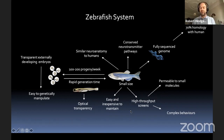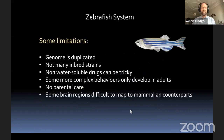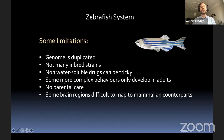There are some limitations. The genome is duplicated, so you have to knock out two copies if you want to do a knockout. There are not many inbred strains. Non-water-soluble drugs can be a little trickier — there are ways to do it, but it's not as easy as just adding them to the water in the tank. Some complex behaviors are only developed in adults, so the high-throughput aspect becomes lower throughput. And there are still some brain regions that are a little difficult to map to the mammalian counterpart.